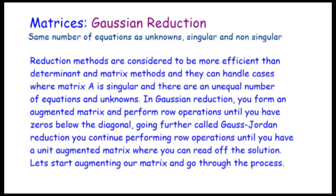Welcome to Maths with Bob. Today we're continuing the series on matrices and we're having a look at something called Gaussian reduction, sticking with the same number of equations as unknowns. We'll look at singular and non-singular cases. These reduction methods give you zeros below the diagonal for Gaussian reduction, and if you go further you get the Gauss-Jordan reduction, which gives you ones down the diagonal so you can just read off the solution.